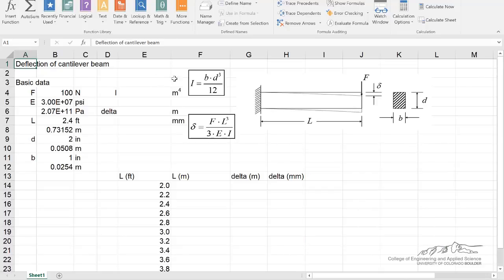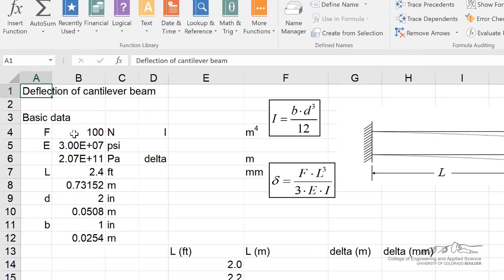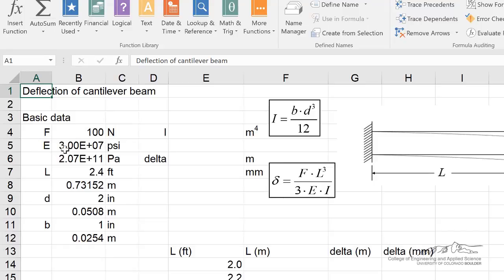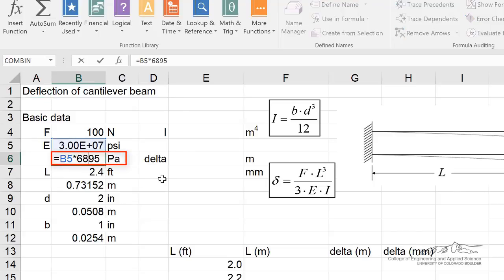So I've got the basic data here. We have the force. We have 100 newtons. We have the modulus of elasticity. I've converted that to pascals. And you can do this using a conversion factor. So this 6895 converts psi to pascals. You can get conversion factors from a lot of different sources. You can just Google them. And we're converting to pascals and meters for our length because we want to use SI units.